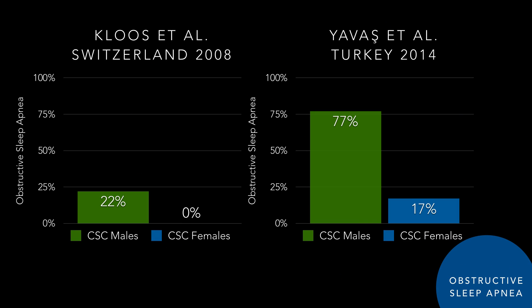Something more near and dear to my heart is obstructive sleep apnea. Studies have shown an association between central serous and increased sympathetic activity, higher levels of catecholamines, and high blood pressure, which are all implicated in obstructive sleep apnea. In Switzerland in 2008, Kloos looked at 36 patients with central serous — 30 males and 6 females — and noted 22% of the males ended up with obstructive sleep apnea. He gave them an Epworth sleepiness scale, and those with a high enough score were referred to pulmonary medicine for sleep studies.